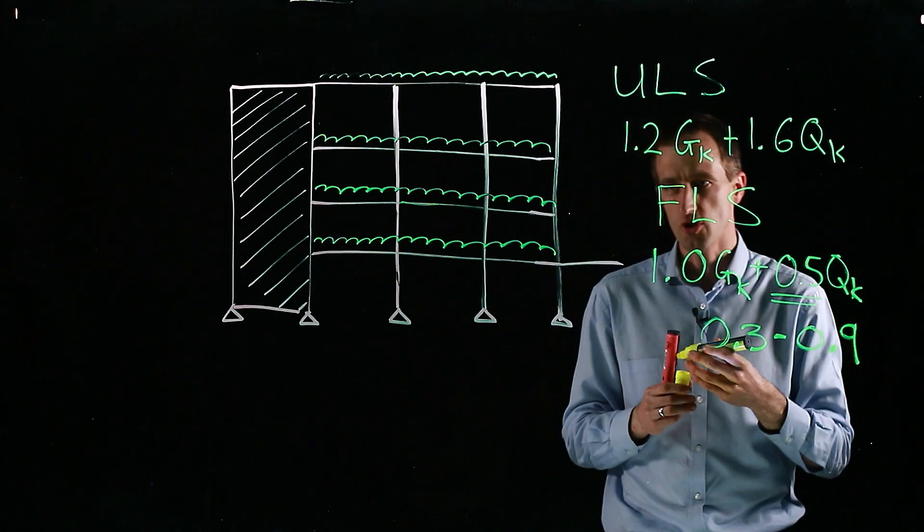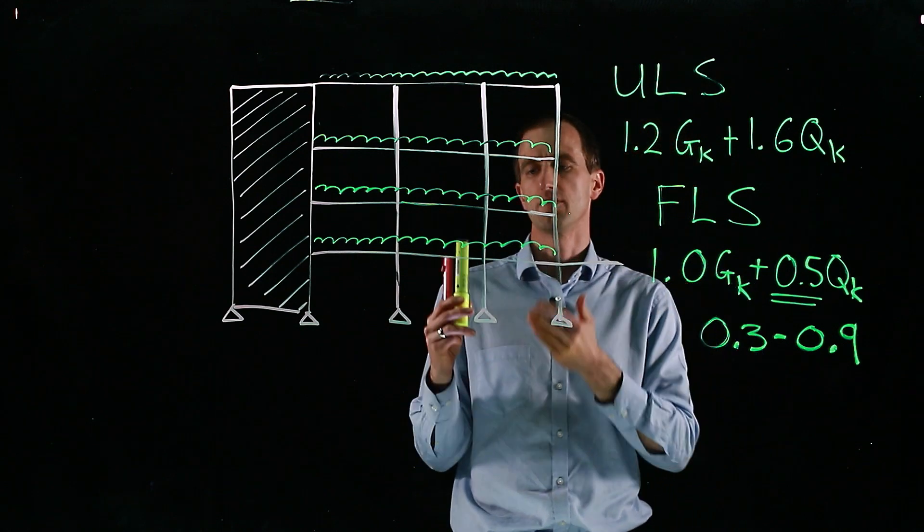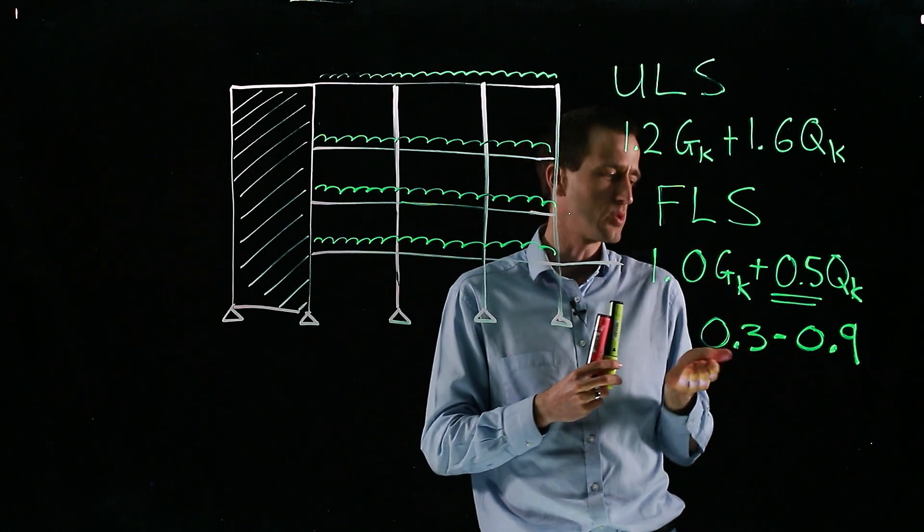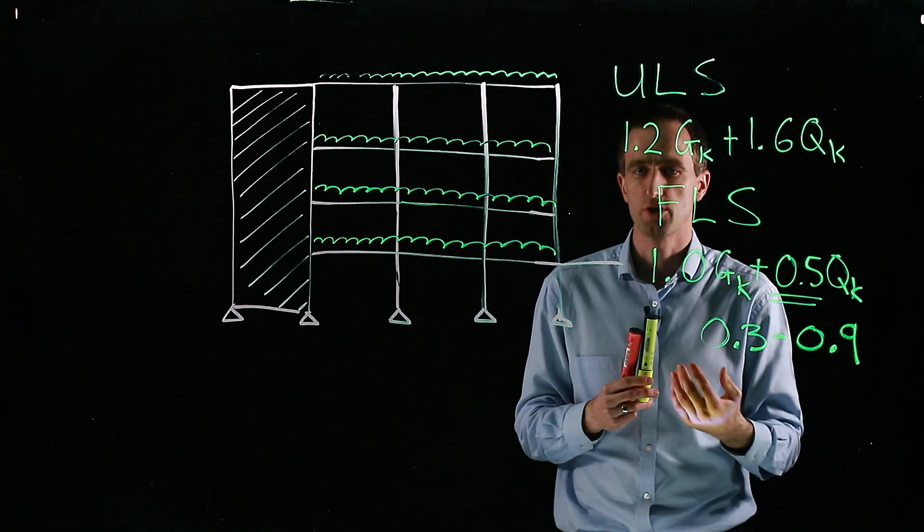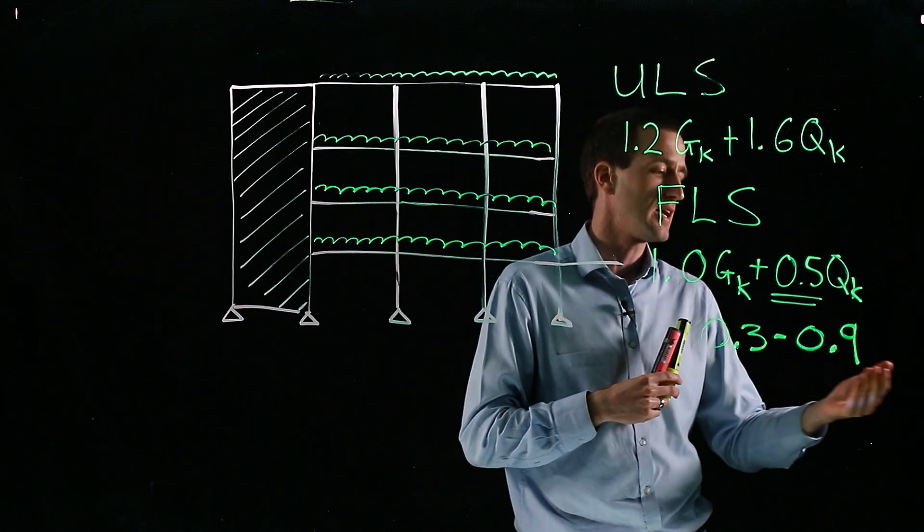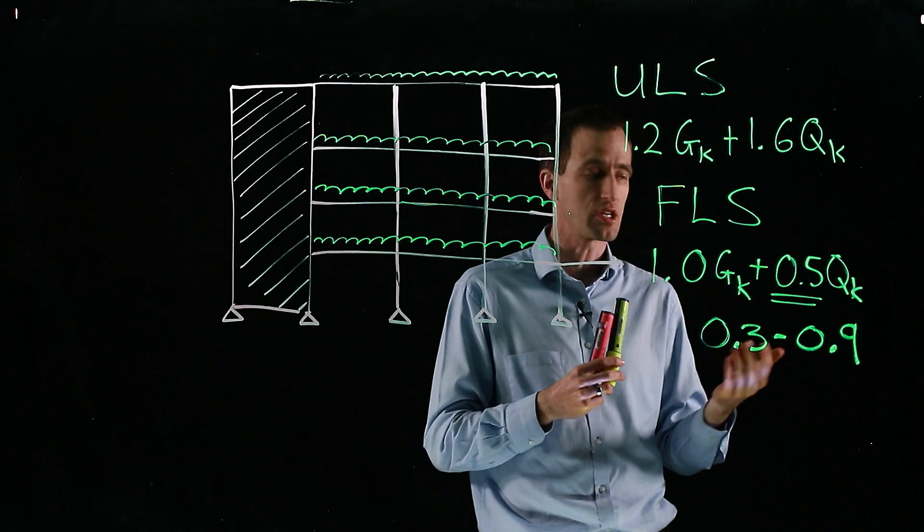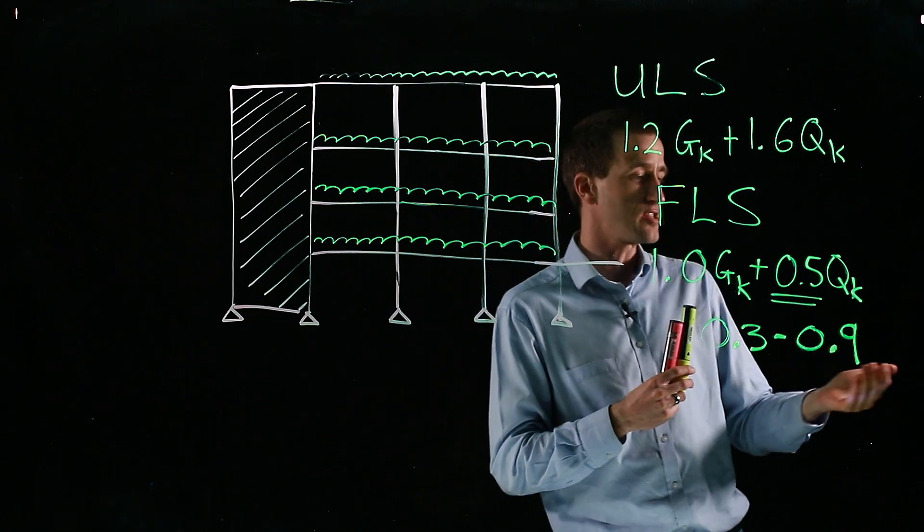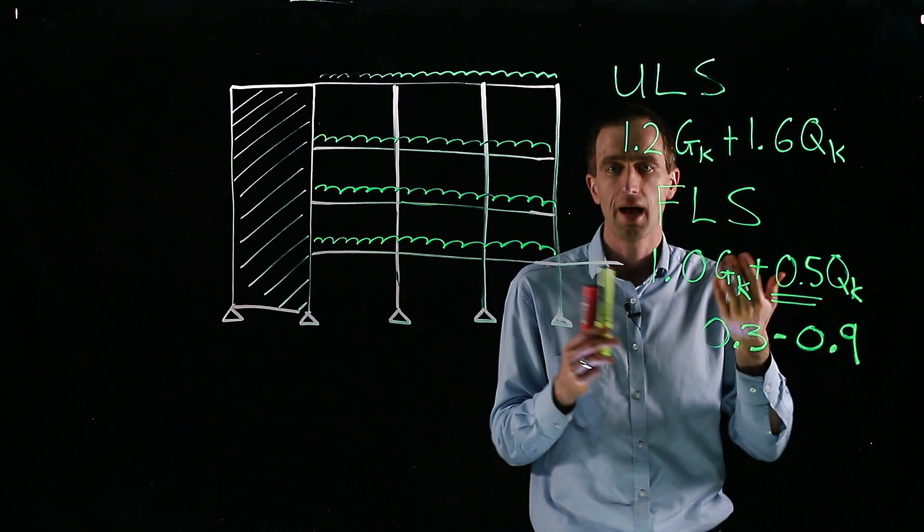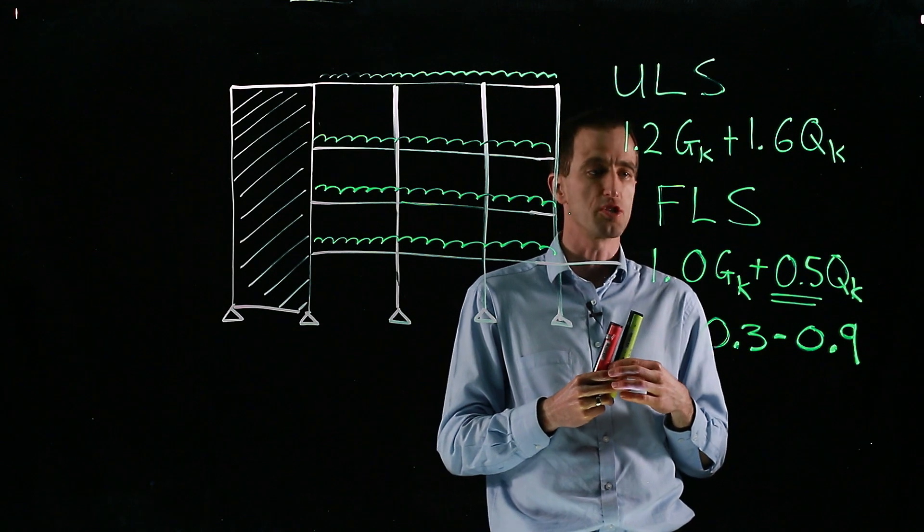If it's a shopping center, and the chance of maximum load happening when the fire is quite low, you'd be towards 0.3. But if it's a storage warehouse, or a silo or something like that, it's very likely that it would be virtually full when the fire breaks out. So then you'd be on the higher side using almost the full value of the imposed load. And you might need to take some engineering judgments on that.